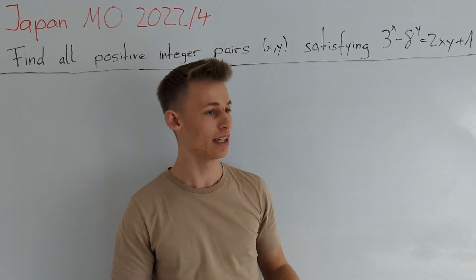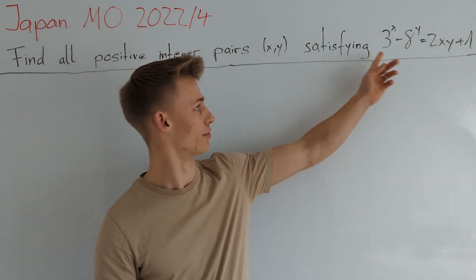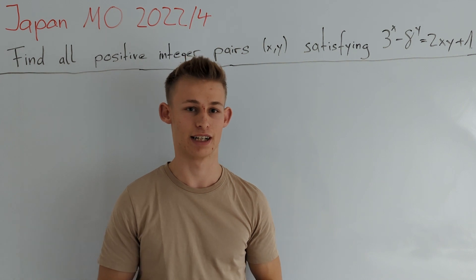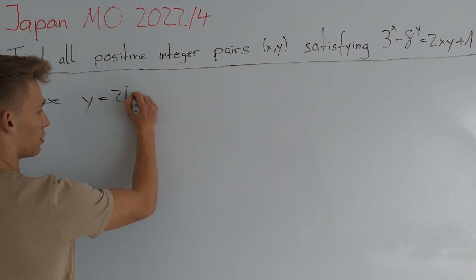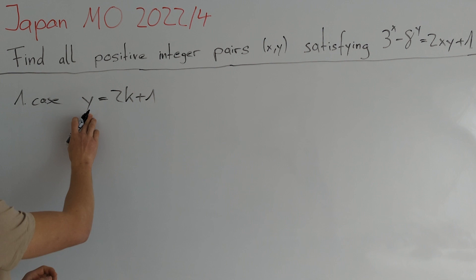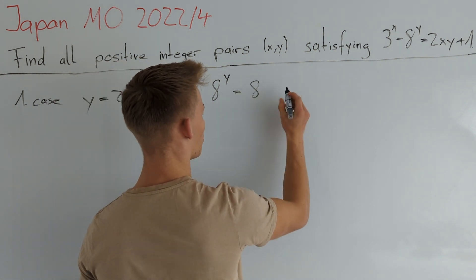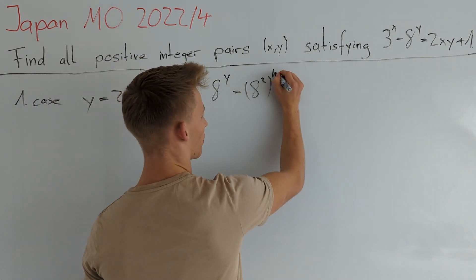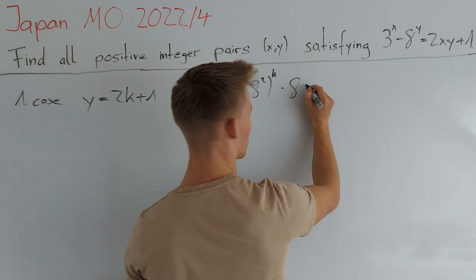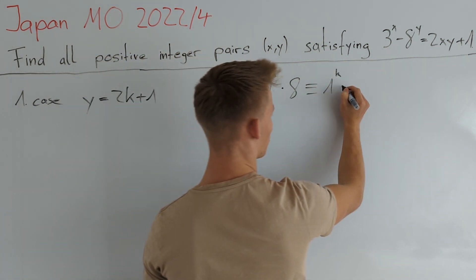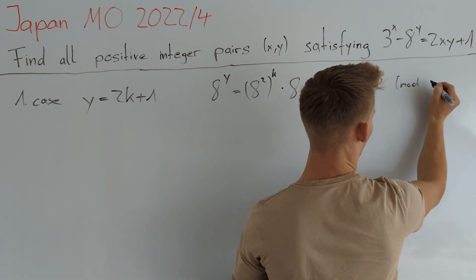If both x and y are even, then we can factor the left hand side. So first we consider the case where one of these two variables is not even and try to get a contradiction. Our first case is that y is equal to 2k plus 1, meaning y is odd. Now we get that 8 to the power of y equals 8 to the power of 2k times 8. Since 8 squared is congruent to 1 mod 3 and 8 is congruent to 2 mod 3, this is congruent to 2 mod 3.